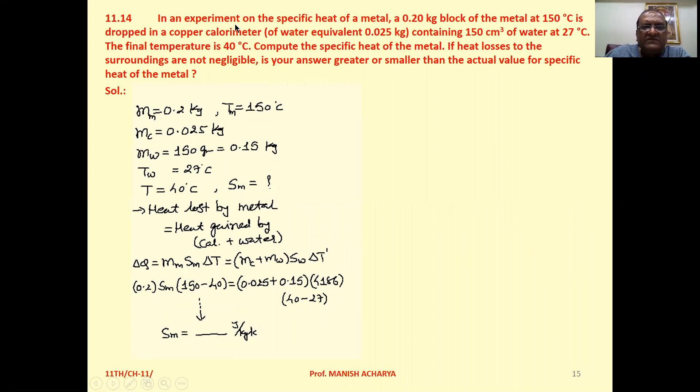In an experiment on the specific heat of metal, a 0.2 kilogram block of the metal at 150 degrees Celsius is dropped in a copper calorimeter of water equivalent 0.025 kilogram containing 150 centimeter cube of water at 27 degrees Celsius.